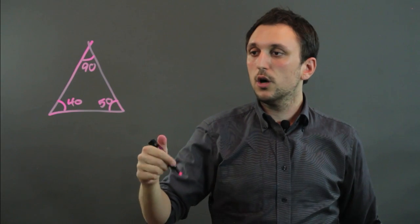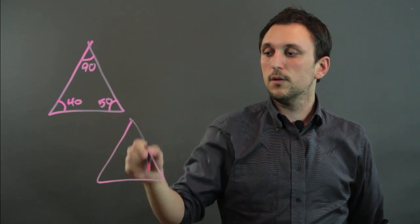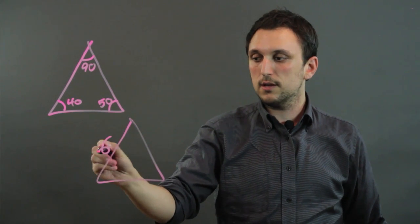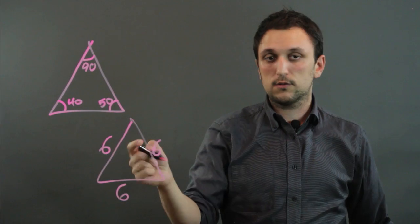Another thing we can measure would be side lengths. So here's a triangle. They look all about the same, so we could say 6, 6, and 6.